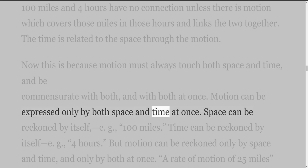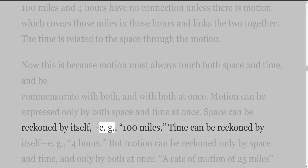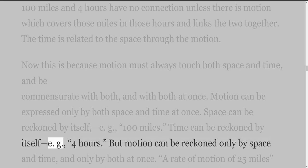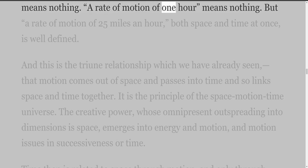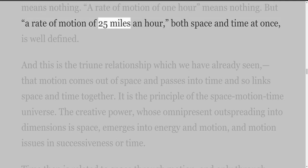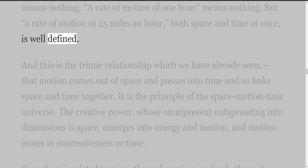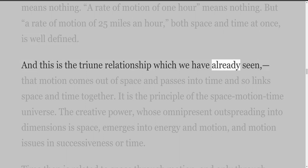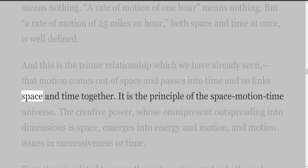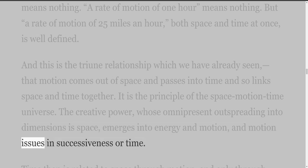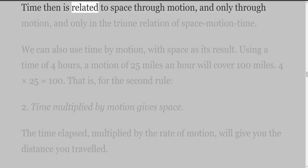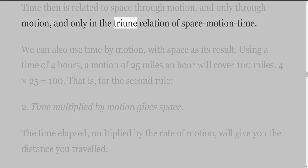Motion can be expressed only by both space and time at once. Space can be reckoned by itself, e.g., 100 miles. Time can be reckoned by itself, e.g., 4 hours. But motion can be reckoned only by space and time, and only by both at once. A rate of motion of 25 miles means nothing. A rate of motion of 1 hour means nothing. But a rate of motion of 25 miles an hour — both space and time at once — is well defined. Motion comes out of space and passes into time, and so links space and time together. It is the principle of the space-motion-time universe. Time is related to space through motion, and only in the triune relation of space-motion-time.